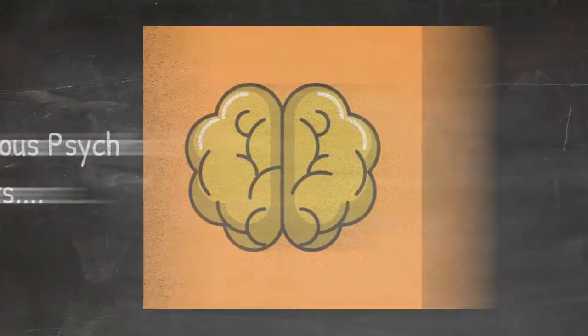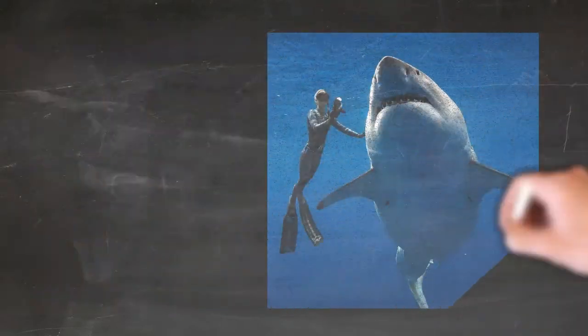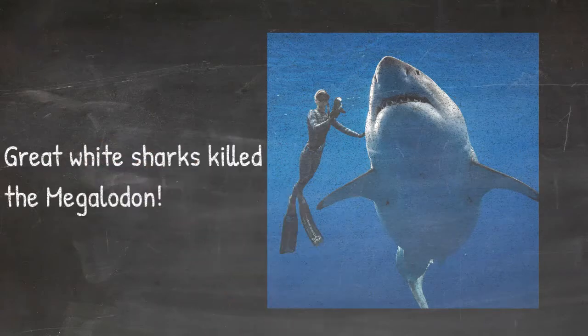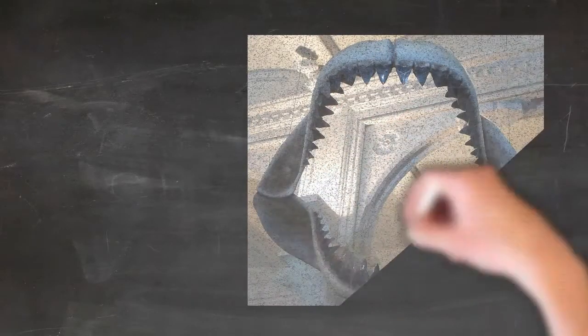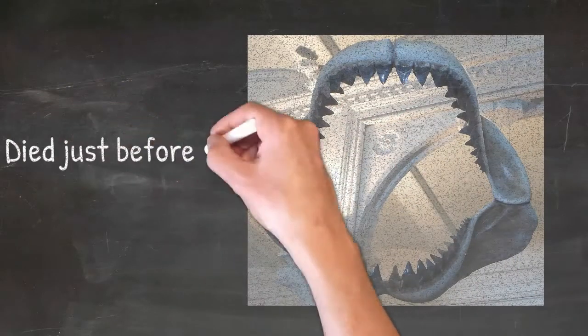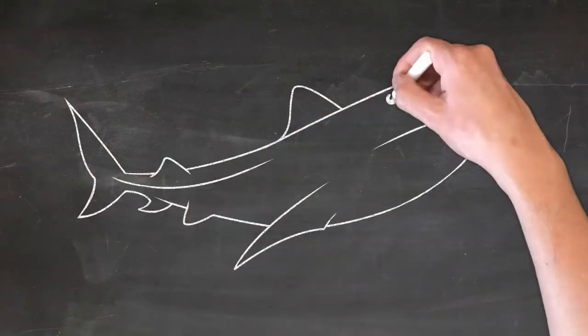Mysterious Psych Presents: The Great White Sharks Kill The Megalodon. Did the Great White Sharks drive Megalodon to extinction? An earlier extinction date puts Megalodon's fall in line with the rise of the Great White Sharks.